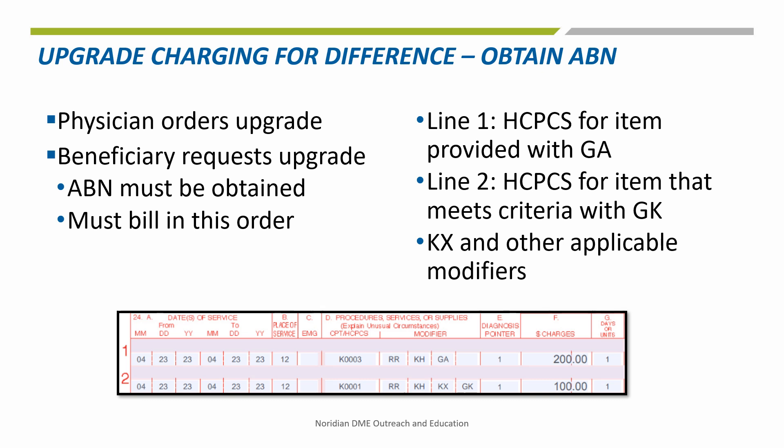When an Advanced Beneficiary Notice of Non-Coverage, also known as an ABN, is obtained, bill the HCPCS code for the item that is provided along with all appropriate capped rental modifiers, as well as a GA modifier on the first claim line, and the HCPCS code for the item that meets coverage criteria with a GK modifier on the second claim line, with all other applicable modifiers required — for example, capped rental modifiers and KX modifier when applicable. The codes must be billed in this specific order on the claim in order for the claim to process correctly. In this situation, the claim line with the GA modifier will be denied as not reasonable and necessary with a patient responsibility or PR message, and the claim line with the GK modifier will continue through the usual claims processing.